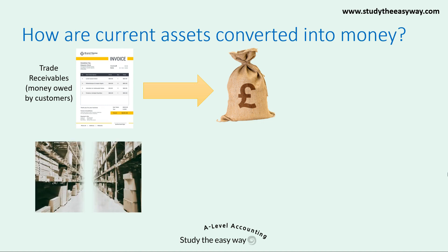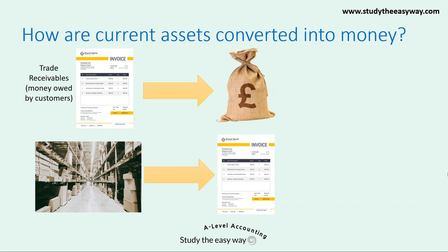The other main example of current assets is inventory. Inventory can be converted into money in two ways. Firstly, by the inventory being sold to customers who pay immediately. And secondly, the inventory being sold via a credit sale transaction to customers, thereby resulting in trade receivables. The trade receivables are then converted into money by the business collecting that money from the customers. Notice then that via this route, inventory can be slower to convert into money, and this is an important fact later on when we look at the ratios.